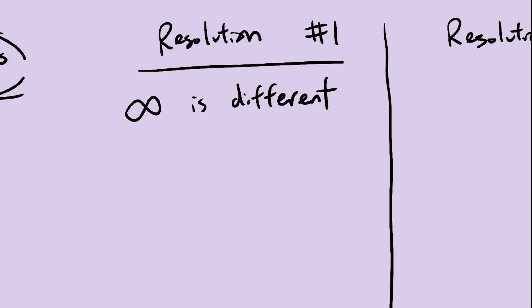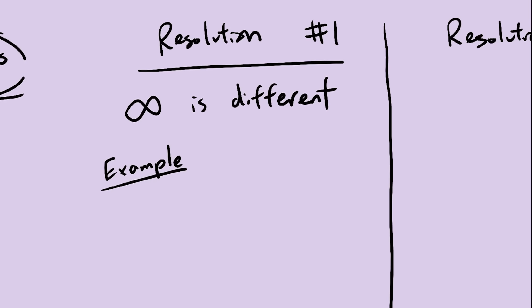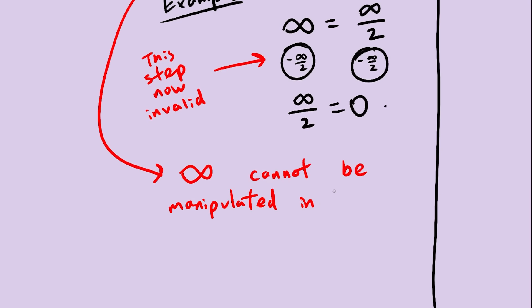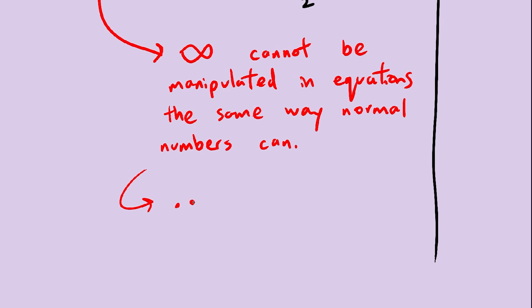First way, we make infinity a new class of number, one that doesn't behave the way numbers usually do. For example, normally you would be able to subtract infinity over 2 and get that infinity equals 0, but let's make it so that you can't do this anymore. You can no longer add or subtract infinities when working with equations, and if we run into any more paradoxes, we can just add more restrictions.